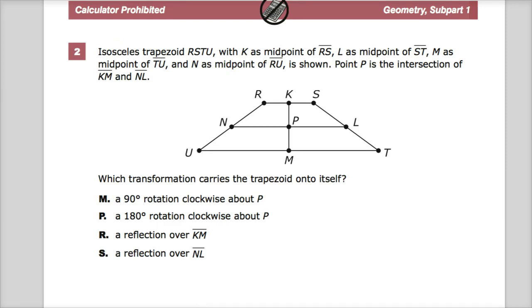The isosceles trapezoid RSTU with K as midpoint of RS, L as midpoint of ST, M as midpoint of TU, and N as midpoint of RU is shown. So you have the picture. They gave you a lot of information, just telling you it's exactly a midpoint.